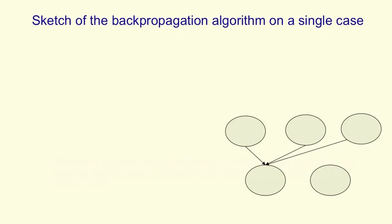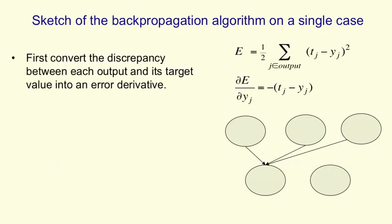Here's a sketch of how backpropagation works for a single training case. First, we define the error as the squared difference between the target values of output unit J and the actual value the net produces for output unit J, imagining several output units. We differentiate that to get the familiar expression for how the error changes as you change the activity of output unit J. The index on a unit tells you which layer it's in: the output layer uses index J, and the hidden layer below it uses index I.